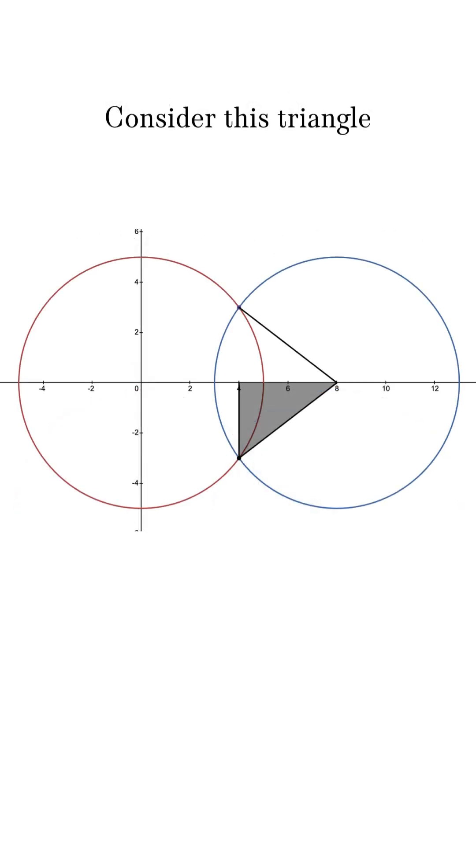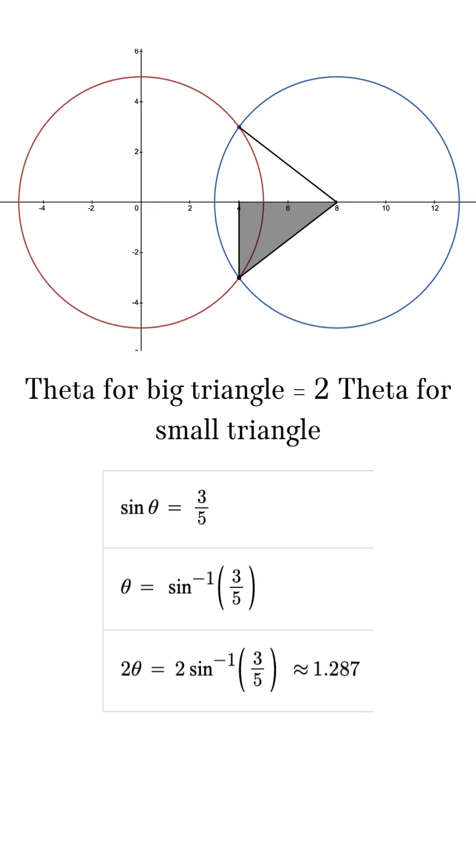Now, consider this triangle. Since figuring out the area of this sector will help us find the area of the little intersection shaded area, it would be great if we could find the theta of the big triangle.